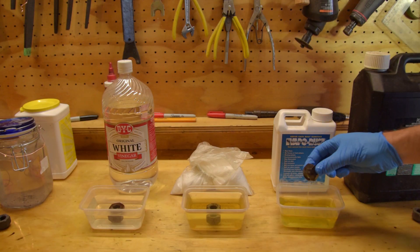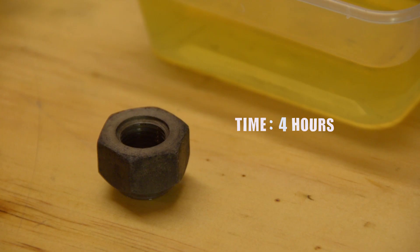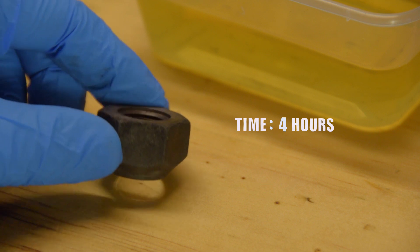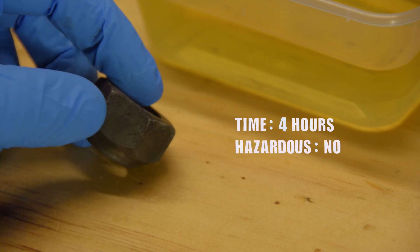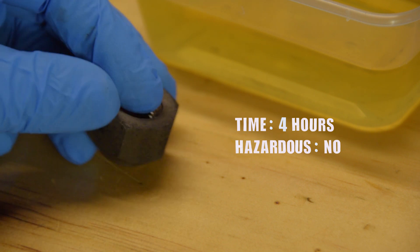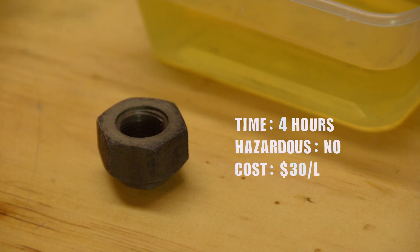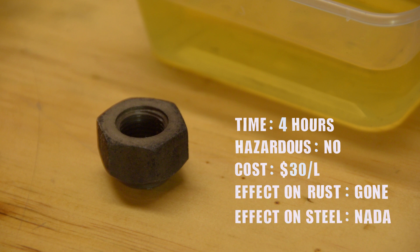In theory, evaporust lasts indefinitely. In reality there are inefficiencies and it will stop working after a while. I left the nut soaking for about five hours. I wouldn't trust that evaporust is non-hazardous. I bet the ingredients list reads like a chemist's dictionary. But it's not an acid so you don't have to worry about it in that sense. Evaporust is expensive. Too expensive for me. I bought this small bottle for the sake of this video, but I doubt I'll be buying enough to use for any large parts. It will not corrode good steel at all. That's why, if you can pay for evaporust, it's a much better option than any acid.